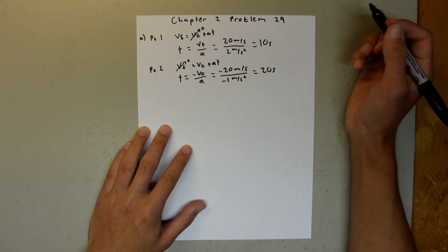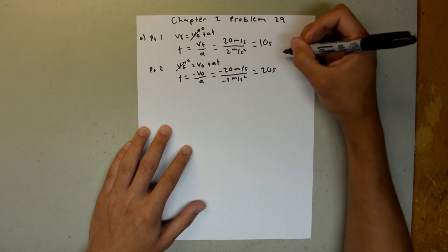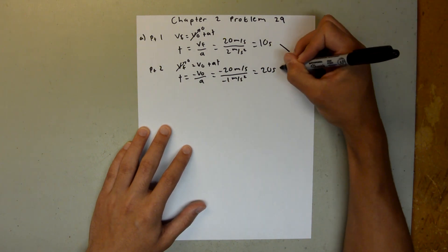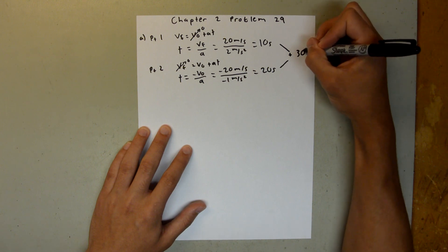So now this is asking for the entire trip, so this plus this, and when you add those together, you should get 30 seconds.